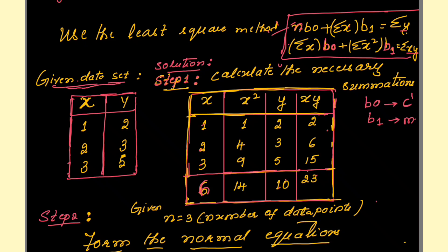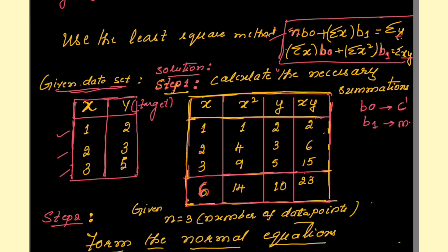In the given data set, three data points are given: x = 1, 2, 3 and the target y values are 2, 3, 5. In the first equation, n = 3 because there are three data points. Summation of x: 1 + 2 + 3 gives us the sum. Summation of y: 2 + 3 + 5 gives a total of 10.